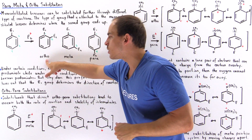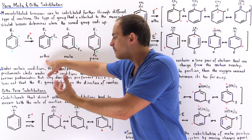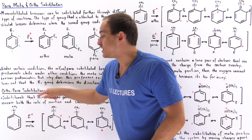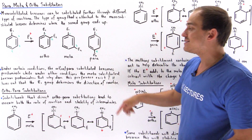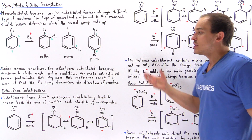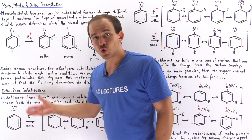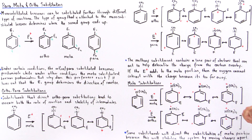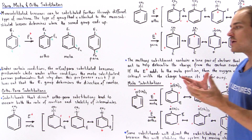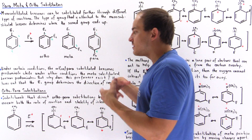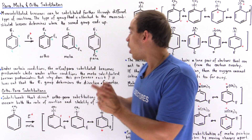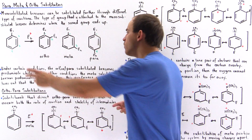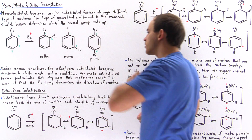So the ortho-para product will predominate when the substituent on the monosubstituted benzene is the methoxy group. Now let's examine a case where the substituent causes the meta product to predominate over ortho-para.